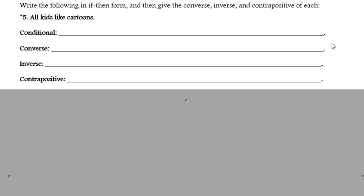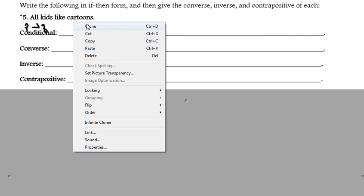Alright, number five, write the following in if-then form and then give the converse, inverse, and contrapositive. All kids like cartoons. So, remember if-then form, that is your conditional. We need to identify a P and then a Q. We need to make this an if-then statement. So, what I would say is if someone is a kid, then he or she likes cartoons.